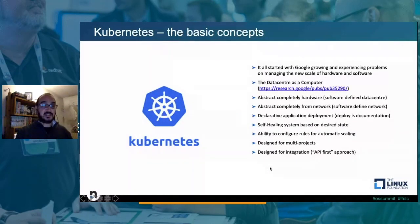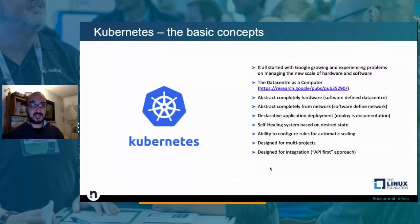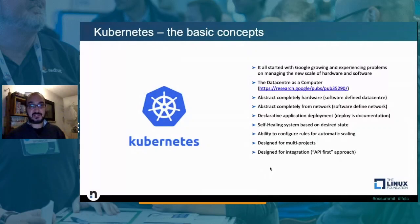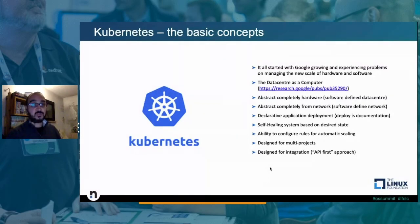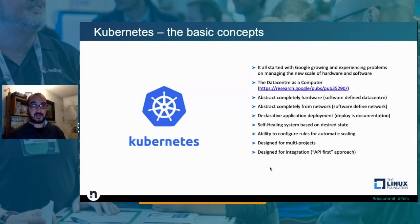You'll see 'K8s' as a shorthand for Kubernetes — it's a 'K', then 8 letters in the middle, then 's'. Kubernetes started from Google's experience managing the scale of their own solutions, with the idea of the 'data center as a computer.' This means abstracting completely from hardware — moving to a software-defined data center and software-defined networking — and implementing declarative application deployment. You also need self-healing and auto-scaling functionality to reduce the operations needed to keep applications running at a scale that is unmanageable by manual or reactive operations.